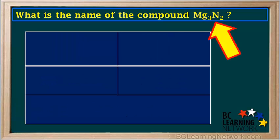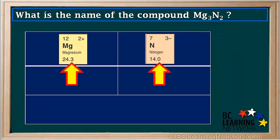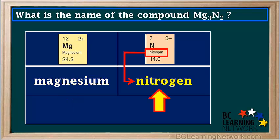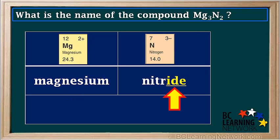Let's do another example. What's the name of the compound Mg3N2? We find the elements on the periodic table. The metal, magnesium, is number 12, and the non-metal nitrogen is number 7. The metal name is magnesium, and the non-metal name is nitrogen, but we change it so it ends in IDE, so it's now called nitride.